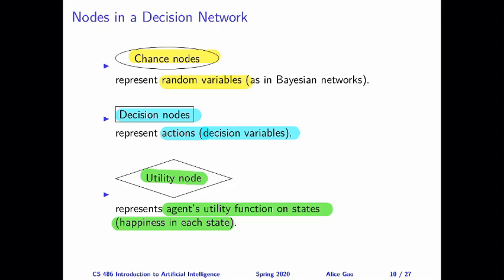Next, look at the robot story and come up with the chance nodes, the decision nodes, and the utility node for this story. The next slide is blank so you can draw all of these nodes on the slide. Do this yourself first, then keep watching for the answers.